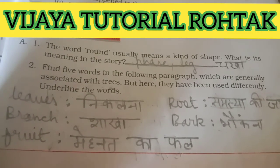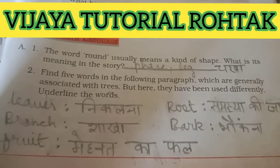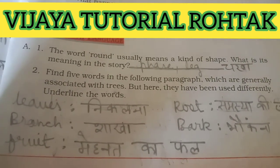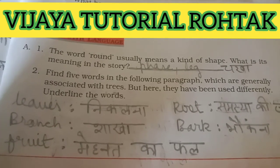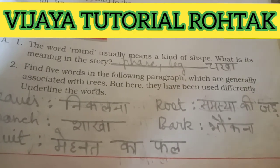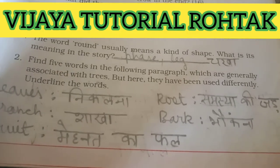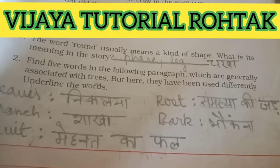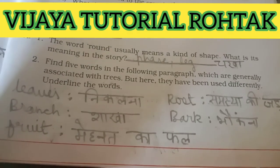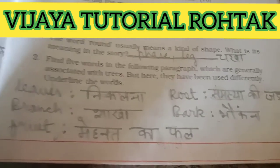Next, 'branch' — like a school or bank can have four branches, meaning 'shakhaen.' Then 'fruit' — here fruit means the result of hard work: 'mehnat ka phal.' The fruit of hard work is always sweet. 'Root' means 'jar' — the root of a problem: 'the root cause of all violence in India is poverty.' Finally, 'bark' means a dog barking — 'bhaunkna.'